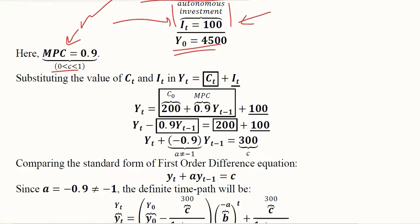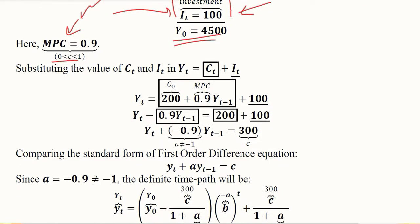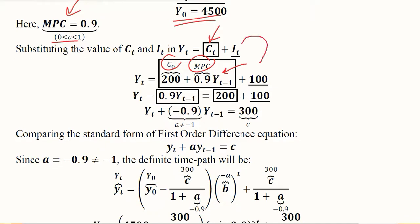Then we have to substitute these values. In the box we have consumption function: this is C₀, this is MPC, this is the lagged dependent national income variable, this is Iₜ. It was autonomous, its numerical value was 100.